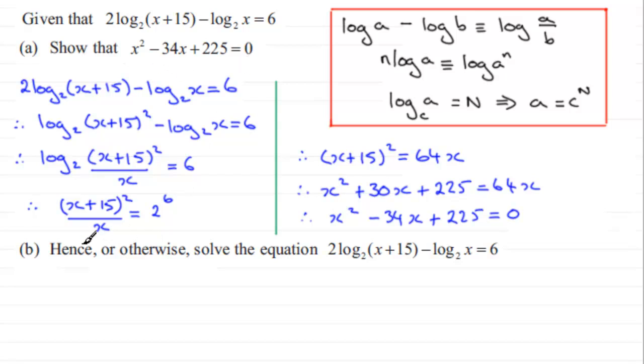Now in part B, it says hence or otherwise solve this equation. Well, we've seen that this equation reduces down to our quadratic equation there. So we'll just put x squared minus 34x plus 225 equals 0 down again.